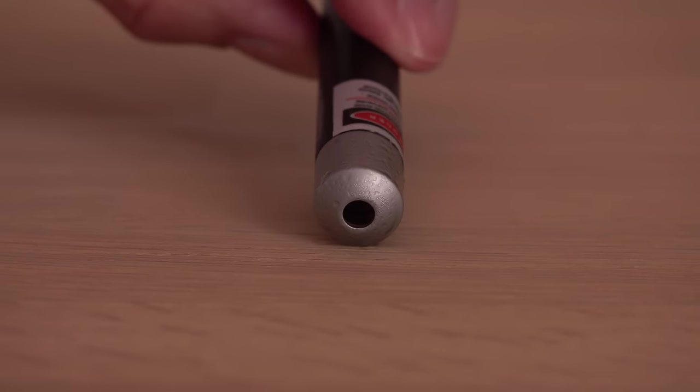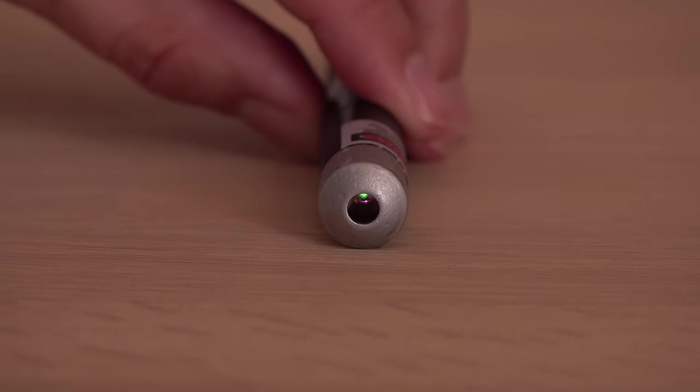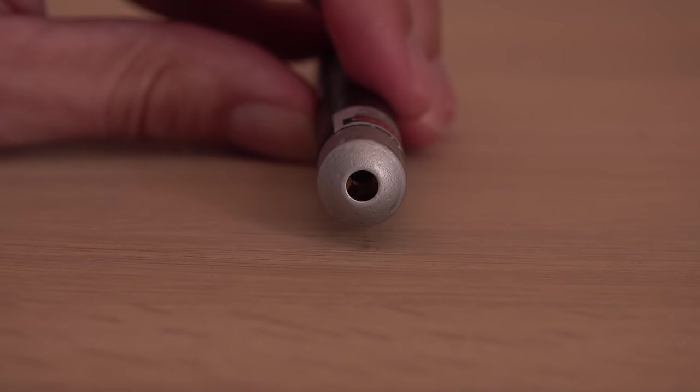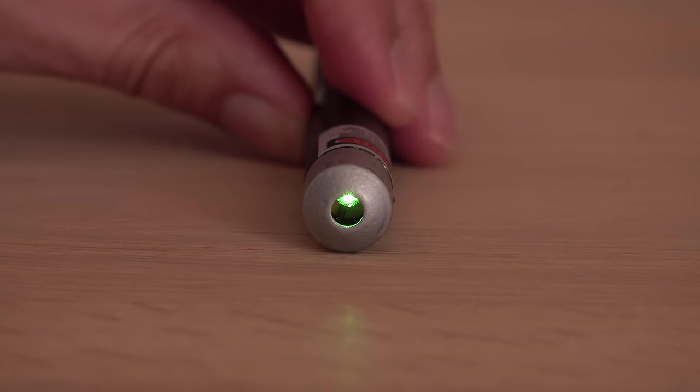After warming up for a while the green laser gradually starts emitting more and more green light. As the crystals inside start converting the infrared to green. The crystals are only efficient at the right temperature and when hit by the right infrared wavelength.